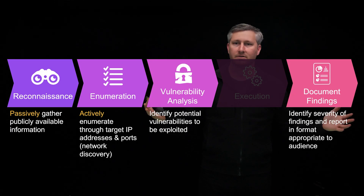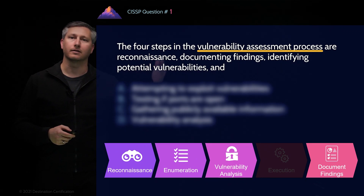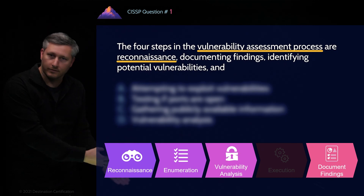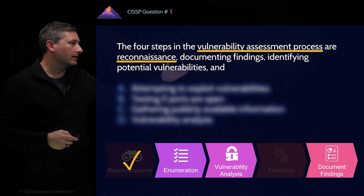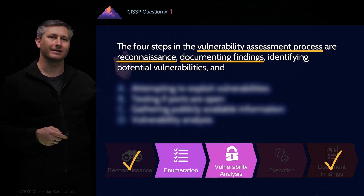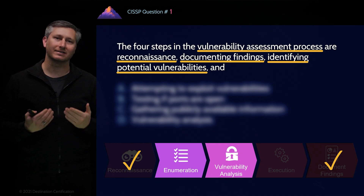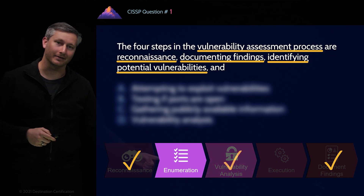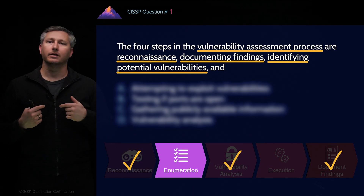So that's the four steps. Let's go back to the question and line these four steps up against the steps listed in the question. The first step listed is reconnaissance — check. The next one is documenting findings — check. The final step listed is identifying potential vulnerabilities. This doesn't line up perfectly with any of the exact step names; however, it perfectly describes what you're doing in step three, vulnerability analysis. And there you go — we now know exactly what step we're looking for as the answer: enumeration.